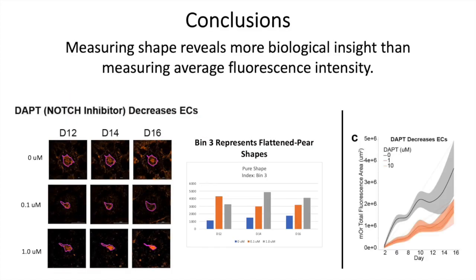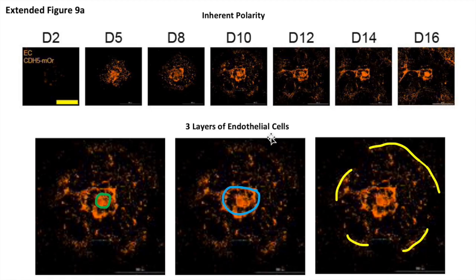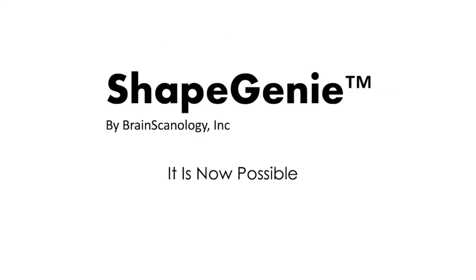So our conclusion from this pilot study is that measuring shape reveals more biological insight than measuring average fluorescence intensity, as shown on the right from the paper that we are analyzing. Though measuring average fluorescence intensity is informative, it says very little about the micro patterning that's happening, especially in the cases of complex organoids that have multiple compartments, as seen in this study. This is the end of our tutorial. We hope that ShapeGenie helps you find amazing things in your data.